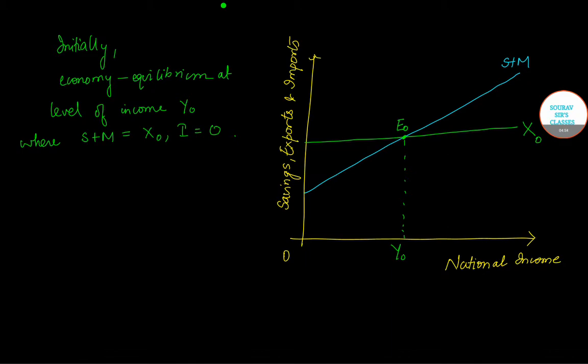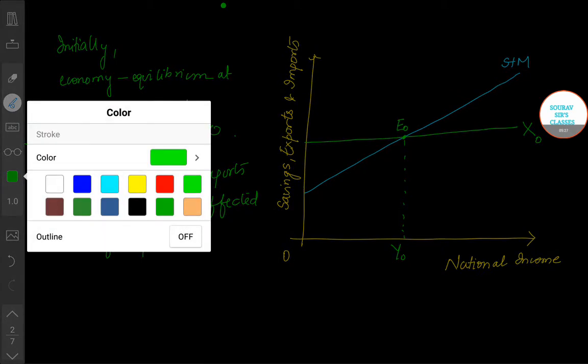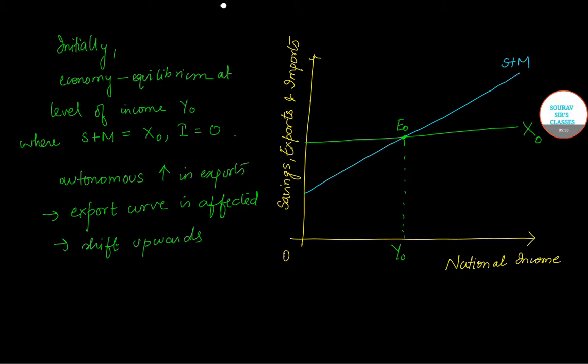Now we will make some changes. Suppose there is an autonomous increase in export. What happens? Given this, the export curve will get affected. Given there is an increase in the export, it will shift upwards. So let us shift the export curve upwards. We have to draw a parallel line, and this is, let me mark it as X₁.